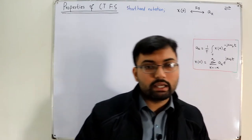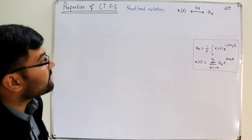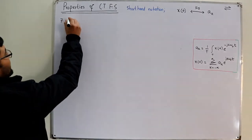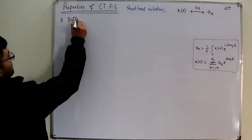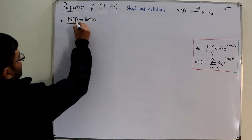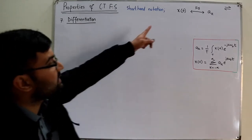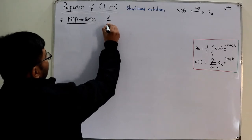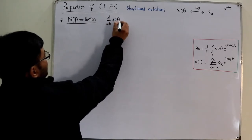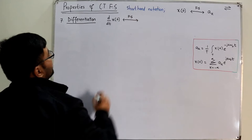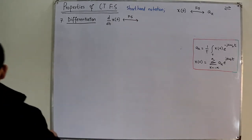Bismillahirrahmanirrahim, assalamu alaikum. Salah Khan here, continuing the discussion. The property of differentiation: if x(t) is a signal with Fourier coefficients a_k, and I take the derivative of x(t), what are the Fourier coefficients of this derived signal?